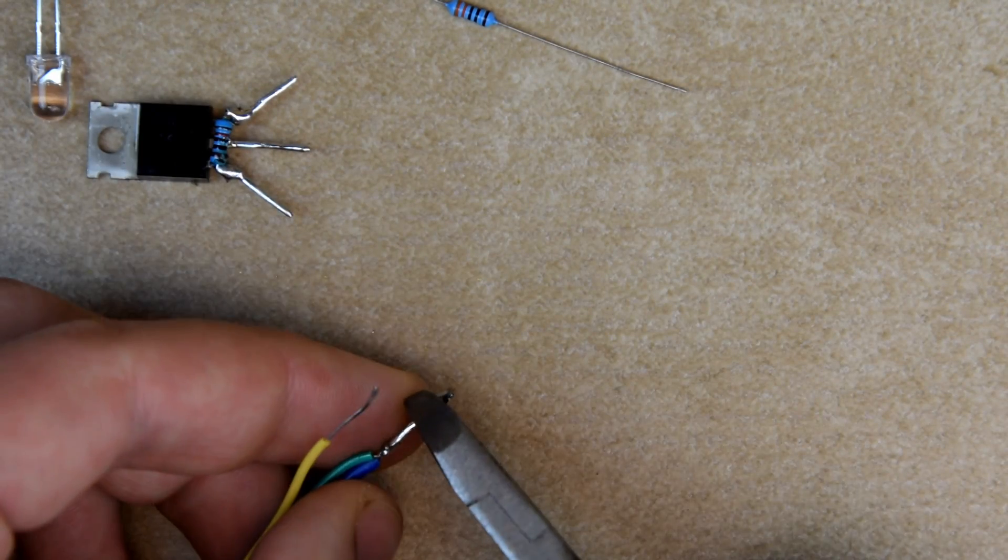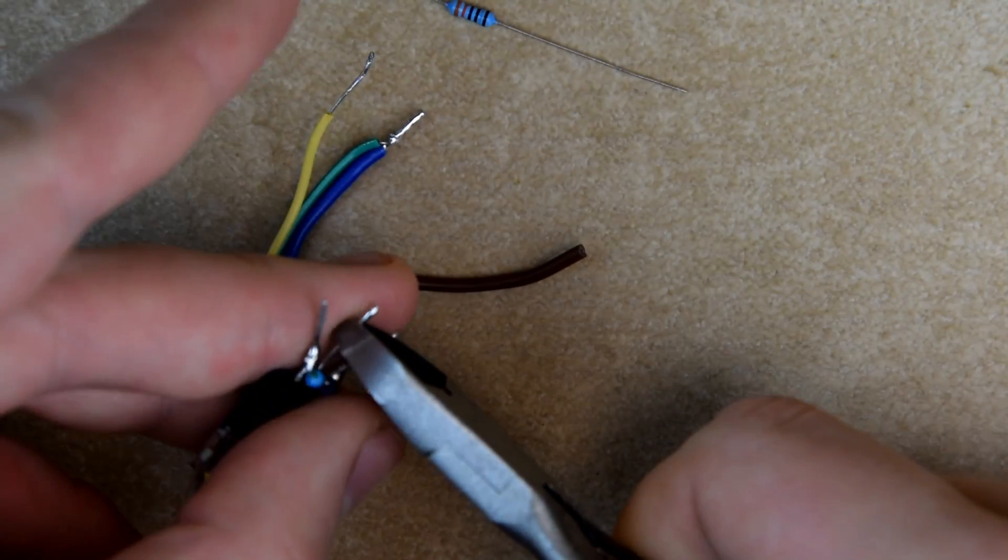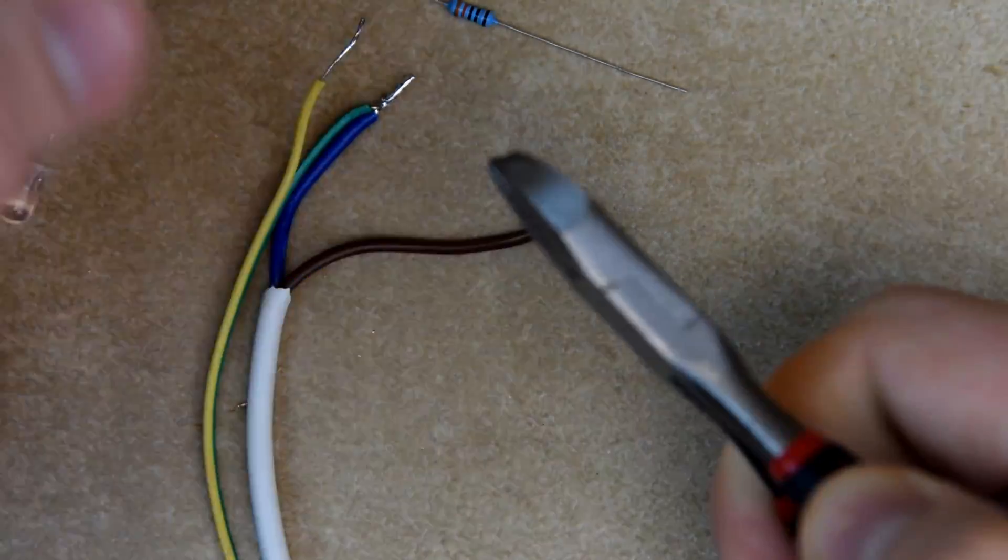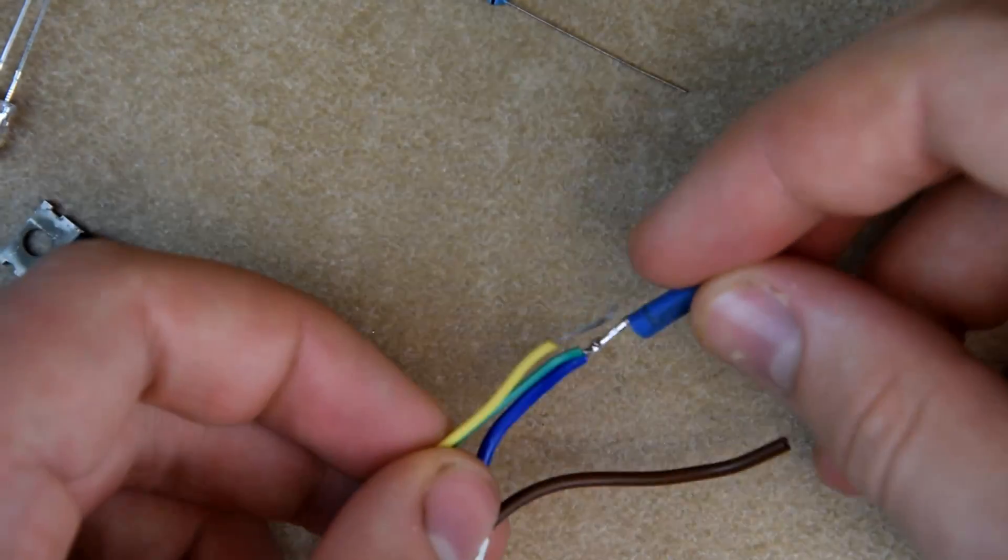Trim it shorter along with the middle lead of our MOSFET. Add some shrink tube and solder it together.